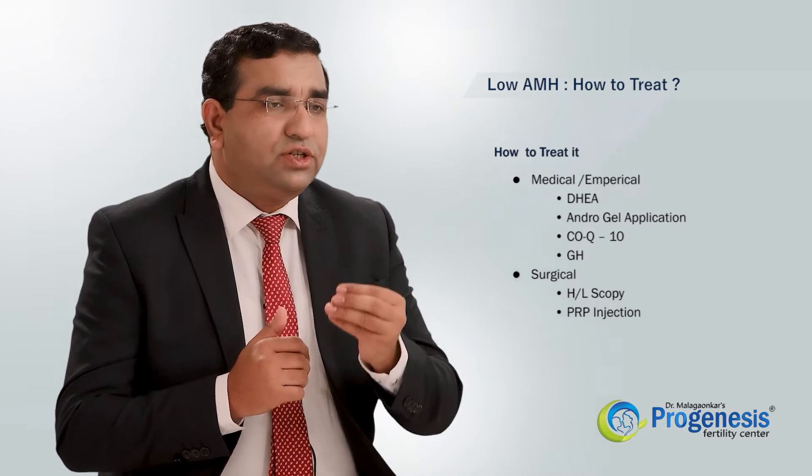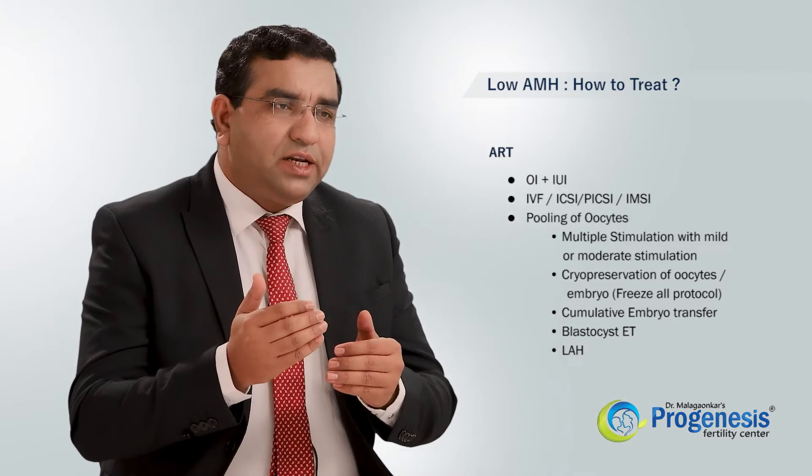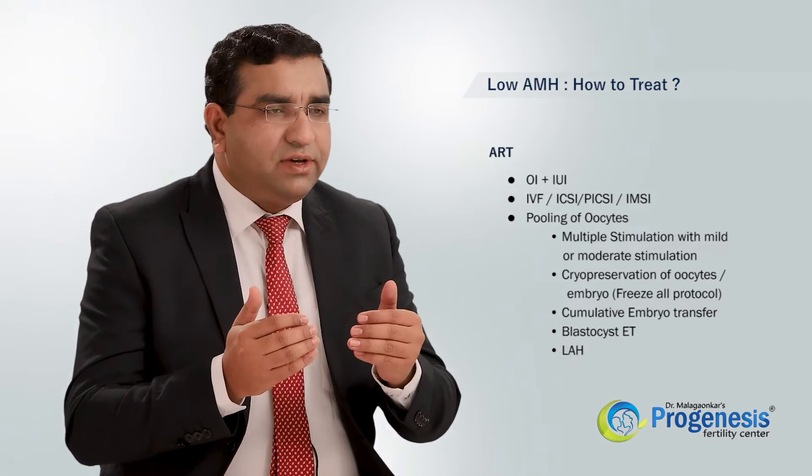For surgical management in low AMH patients, we can perform laparoscopy or PRP (platelet-rich plasma) injection into the ovarian stroma. The next line of management is ART — assisted reproductive technology — which includes super-ovulation with IUI or advanced options like IVF.